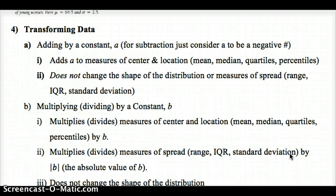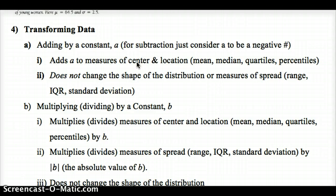Let's look at what going through these transformations does to the data. Adding a constant A — for subtraction, consider A to be negative — adds A to the measures of center and location: mean, median, quartiles, and percentiles. It doesn't change the shape of the distribution or measures of spread, because the whole curve just shifts to the right or left, with the IQR sliding along with it. Every data point moves the same amount, so the spread doesn't change.